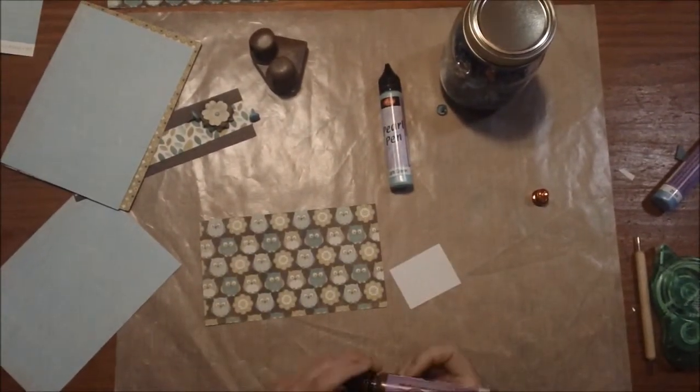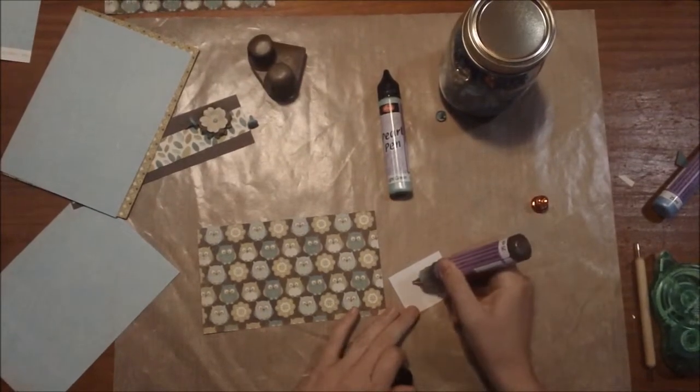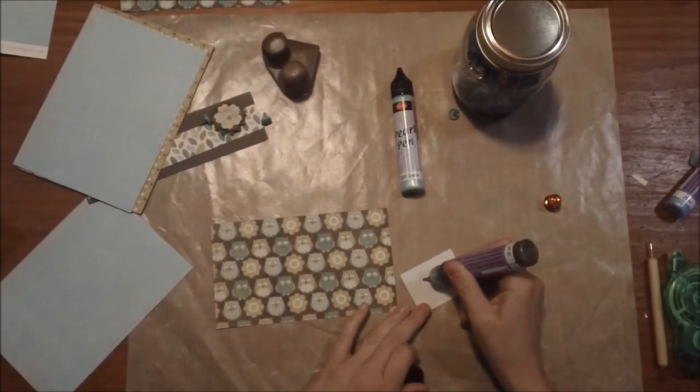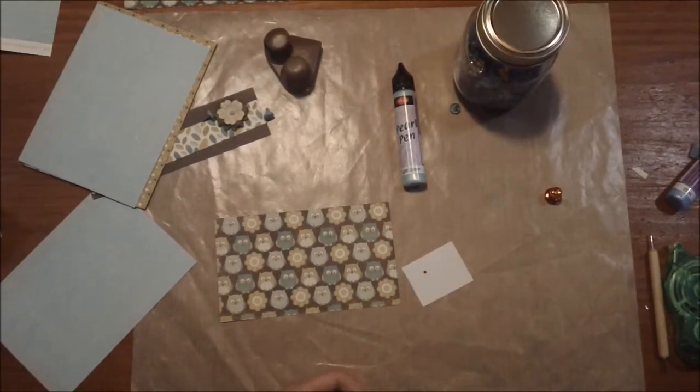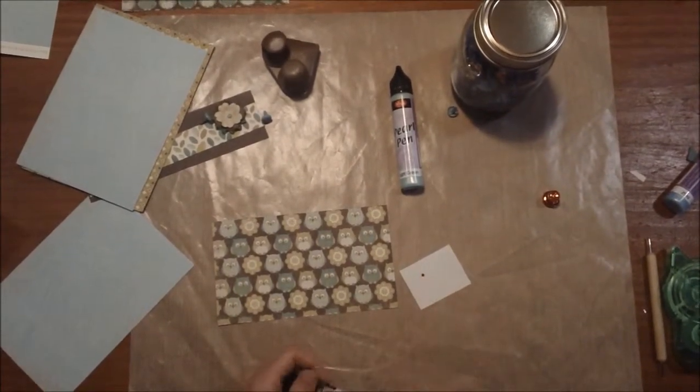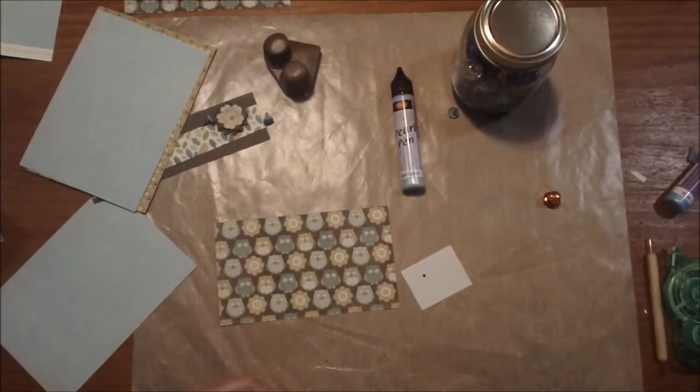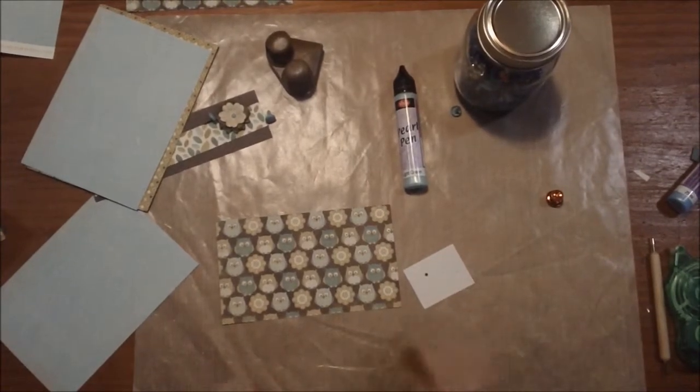Now there's a couple ways you can do this but how these work is you just lightly squeeze to the desired size that you want and lift up. Now you will have that little Hershey kiss there but once it dries it will lower down into a perfect little dome.